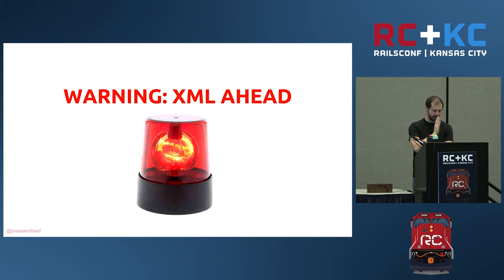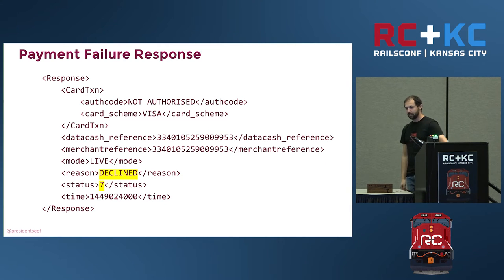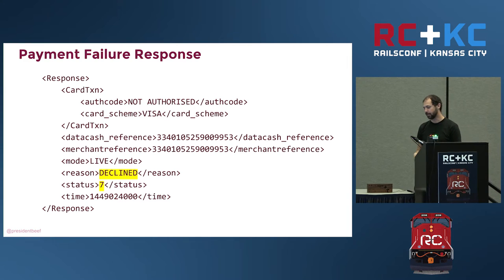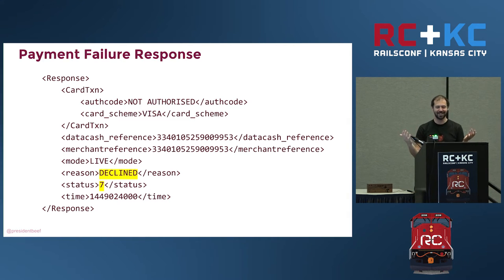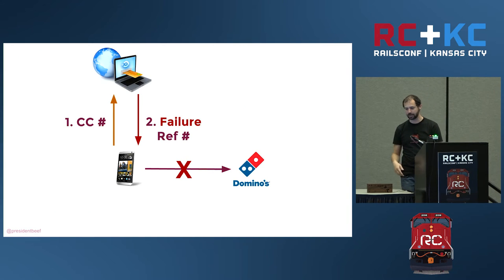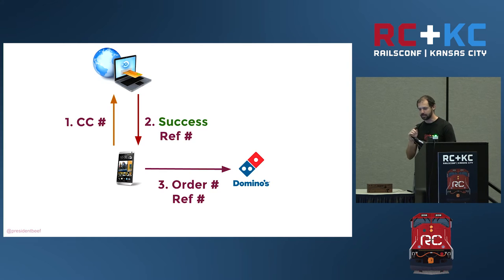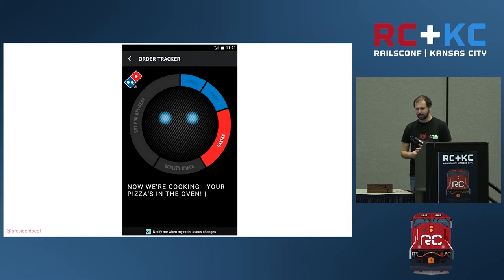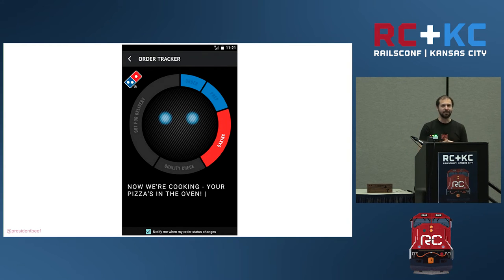There is some XML ahead. This is what would come back from the payment processor if it failed — not authorized, declined, status seven. He thought: what if I changed it to success? As far as he knew, he didn't change anything else, just changed it to success and sent that on to Domino's. He had no idea if it would work, so he checked his app and it said they were working on it. He called them and they confirmed the order was in progress. He felt kind of bad about it — so when the delivery person showed up, he paid for it.